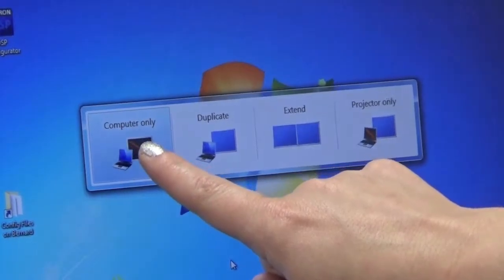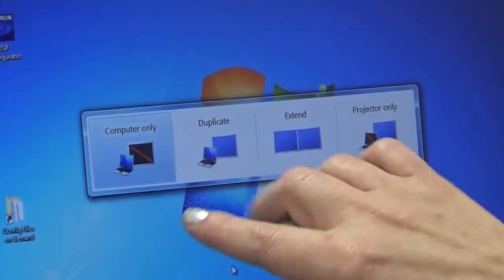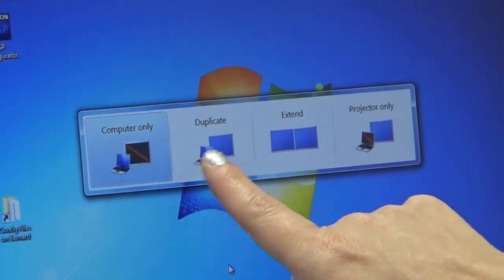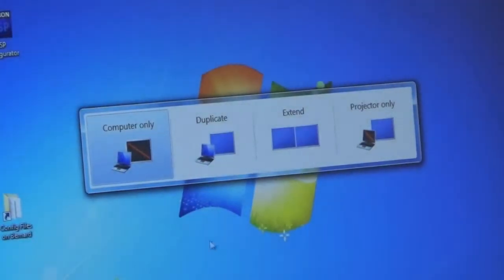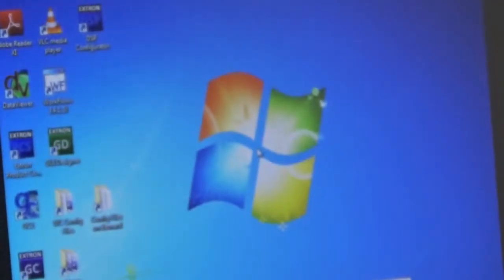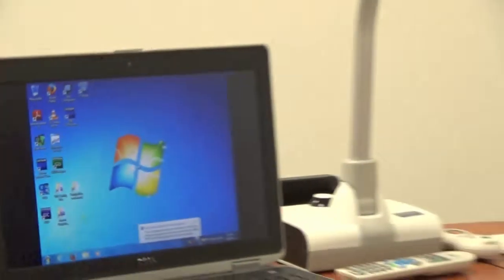9 times out of 10, for whatever reason, the older computer is not duplicating the screen yet, and it says computer only. If you will click on the duplicate, let it restart. At this point, you should see this projected up on the projector from your PC.